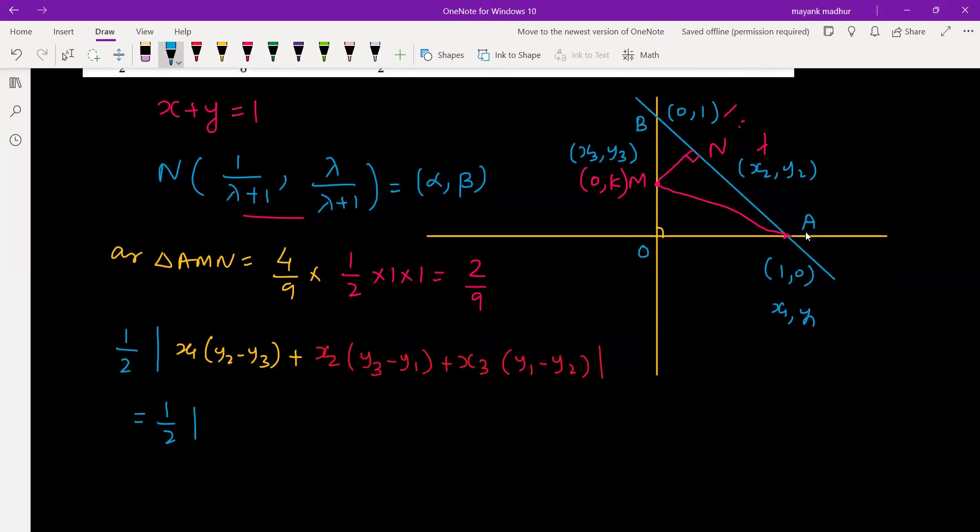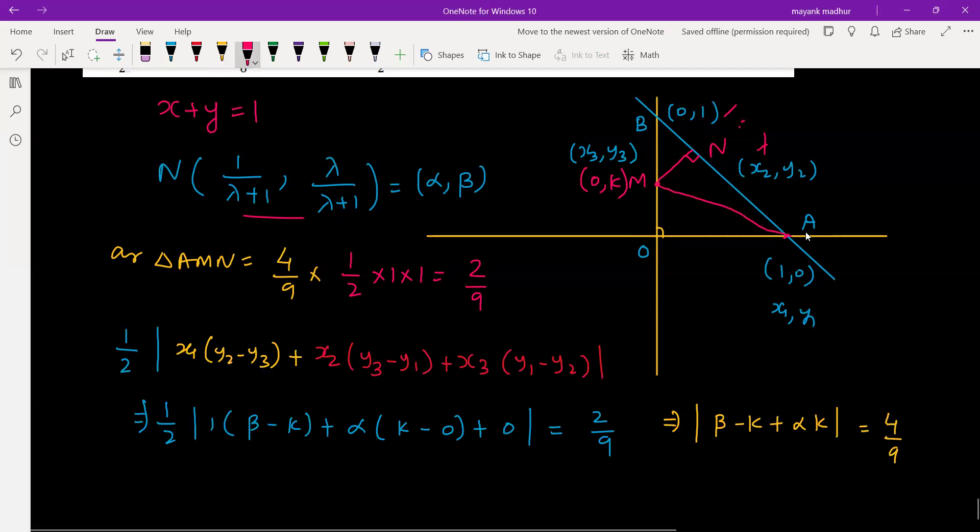So x1 is 1, y2 is beta minus y3 which is k, plus x2 which is alpha, then y3 is k minus y1 which is 0, plus x3 is 0. This will equal to 2 by 9. So beta minus k plus alpha k, the modulus equals 4 by 9.